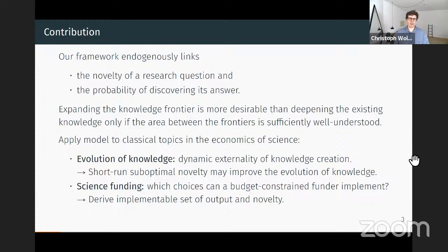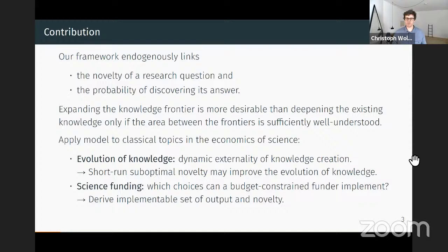We show that expanding the knowledge frontier is only more desirable than deepening existing knowledge inside the known frontiers if the area inside the frontiers is already sufficiently well understood. Once we have this characterization, we apply it to two classical questions in the economics of science. First, the evolution of knowledge, where we show there is a dynamic externality—researchers do not take into account how their findings today will affect the choices of future researchers. We can then show it can be optimal to incentivize excessive novelty to improve the evolution of knowledge.